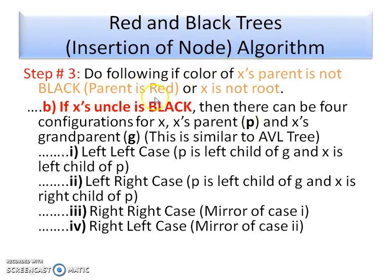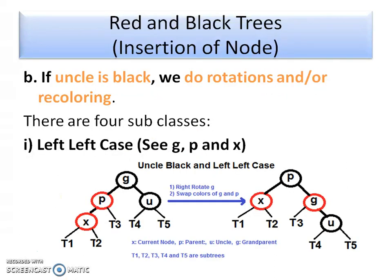Now for Case 2: if the parent is red and X is not a root but the uncle's color is black, then we need to perform rotation — similar to AVL trees. Depending on the configuration, we identify the left-left case, left-right case, right-right case, or right-left case. In this case the parent is red but the uncle is black, creating a violation of property number 4. We need to perform rotations accordingly.